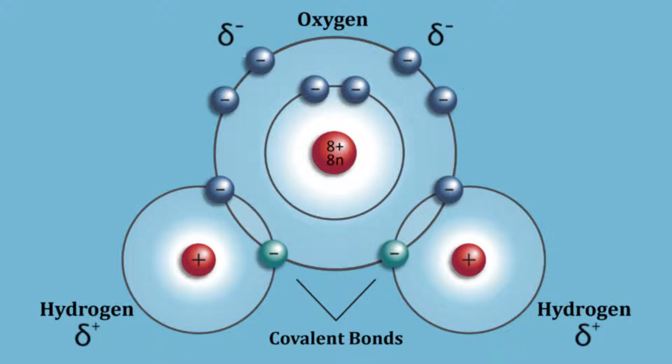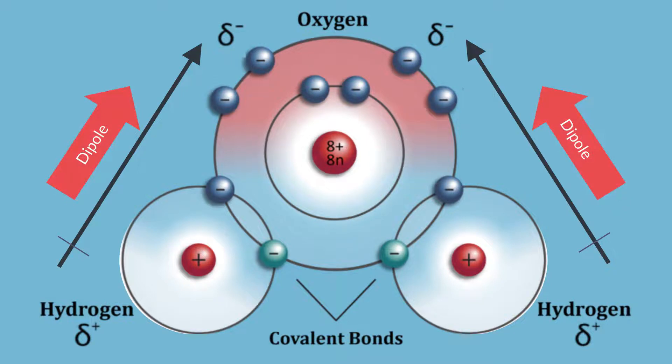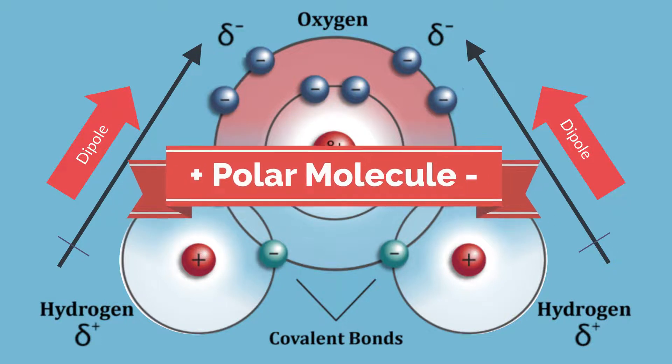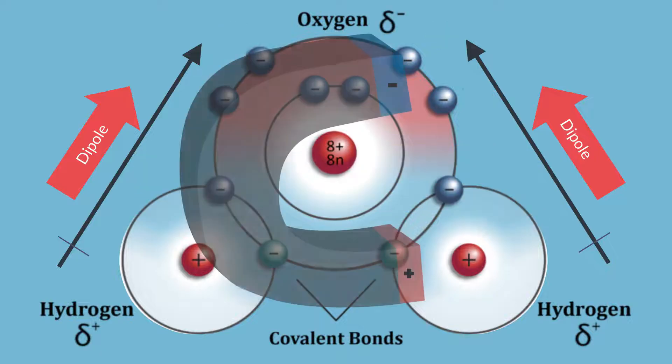The delta symbols denote the partial charges. This imbalance is called a dipole, causing the water to become a polar molecule to have a positive and negative side, similar to a magnet.